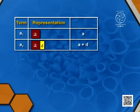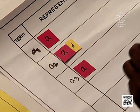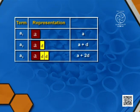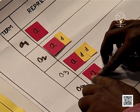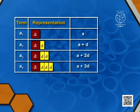For the second term, we take A and add the common difference D, giving A plus D. For the third term, we add D to the second term — A plus D — giving A plus 2D. For the fourth term, we add D to the third term, A plus 2D, giving A plus 3D.